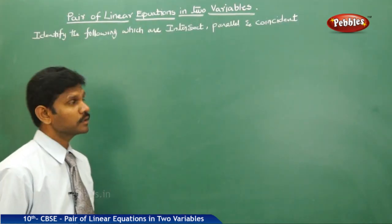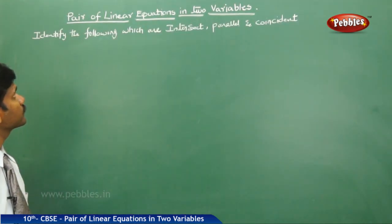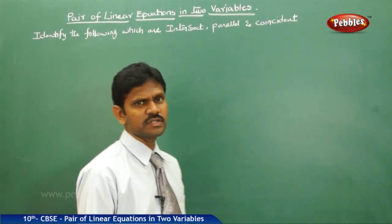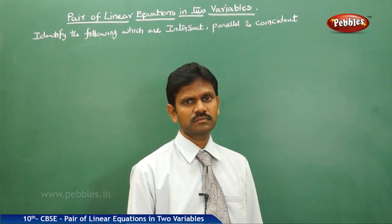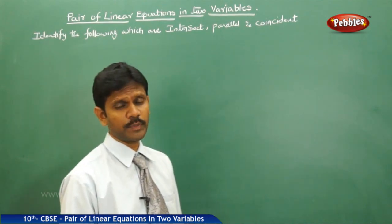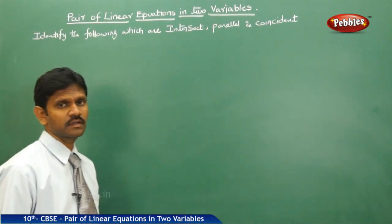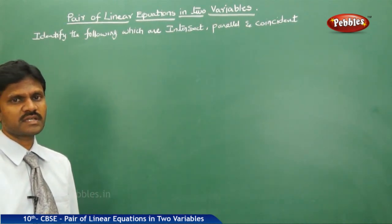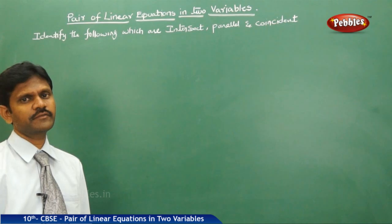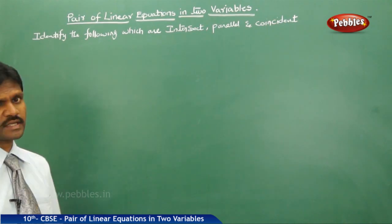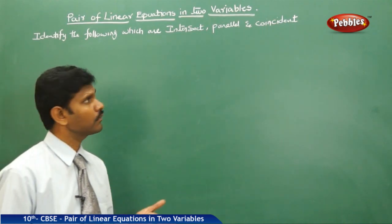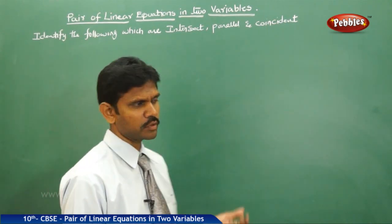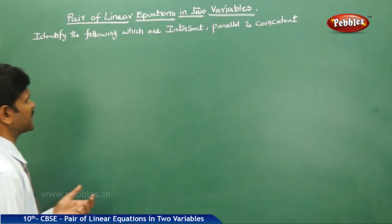Identify the following: which are intersecting, parallel, and coincident. From our previous knowledge, the pair of linear equations has three different natures — either intersecting, parallel, or coincident to each other. Let us see some examples.